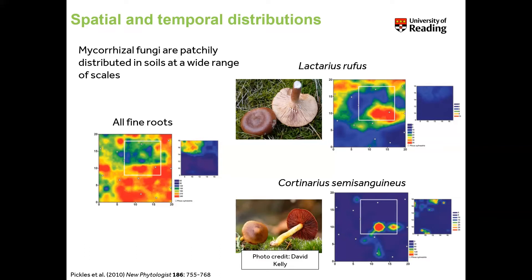What I found was patchy distributions of different species distributed at different scales. Some species appear to be competing with each other — competitive interactions and exclusion — while other species seem to be facilitating each other. It's always important to remember that you have lots of different processes going on between all the different players. Different species of mycorrhizal fungi may be providing benefits to their hosts but also competing with other fungi, which has consequences for where we find them and how they are distributed.